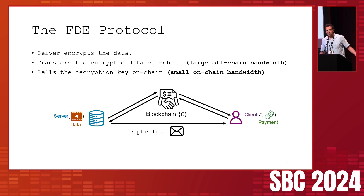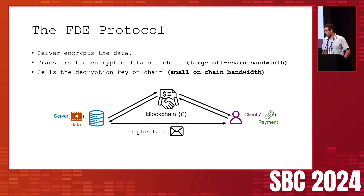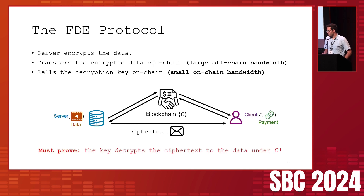This seems like a viable solution, but how does the client know that the key it will buy from the server on-chain will actually decrypt the ciphertext to the correct data — namely the data underlying the commitment? The server must prove to the client that the key it's going to sell will decrypt the ciphertext to the data under the commitment.